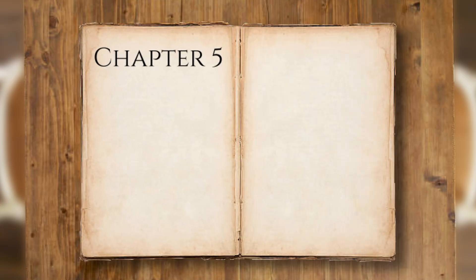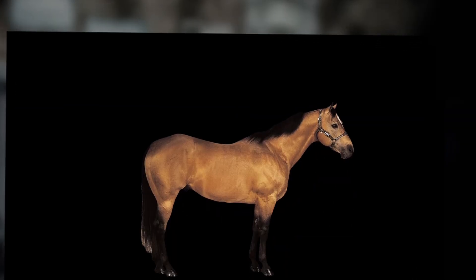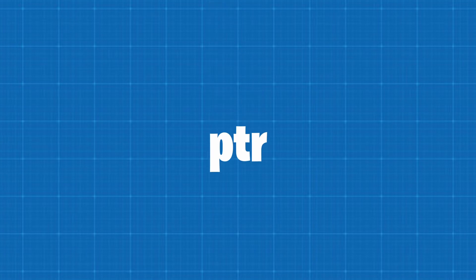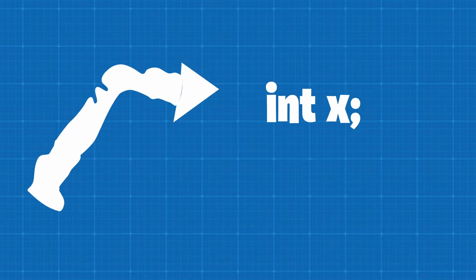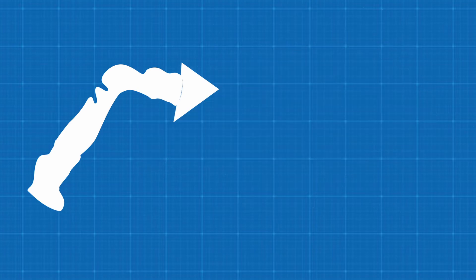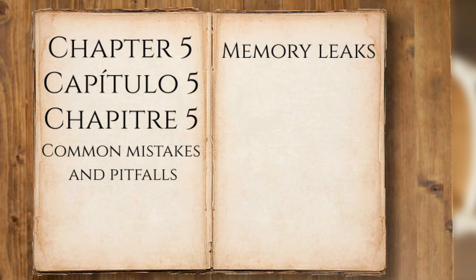Now, the fifth and final chapter: Common mistakes and pitfalls. Have you ever been told that you have dangling pointers? These are pointers that point to data that has already been freed and deallocated. To avoid this, set the pointer to null after deallocating memory.